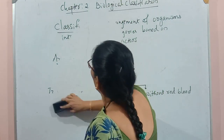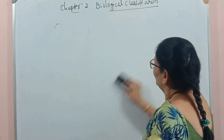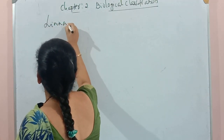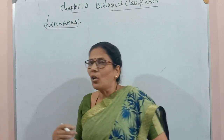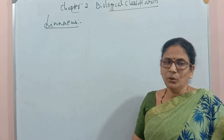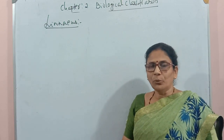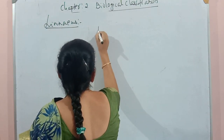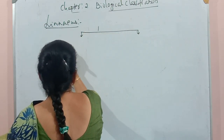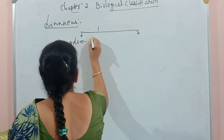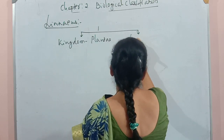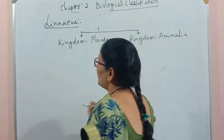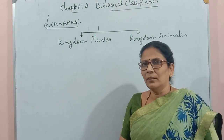The next classification was made by Carolus Linnaeus. Linnaeus also made two kingdoms or two groups of organisms. All organisms were divided into two kingdoms: one is Kingdom Plantae and the other is Kingdom Animalia. This is the first simple scientific method-based classification.